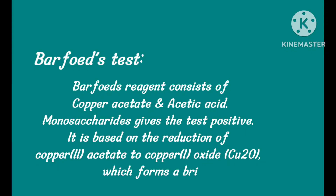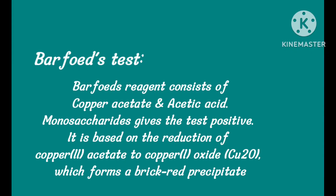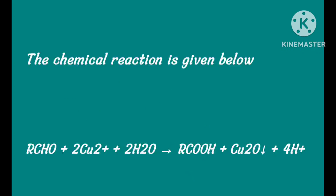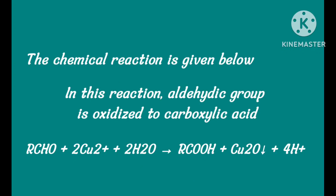Barfoed's test: This test is useful to differentiate between monosaccharides and disaccharides — for example, glucose and fructose from lactose and maltose. Barfoed's reagent consists of copper acetate and acetic acid. Monosaccharides give a positive test. This test is based on the reduction of cupric ions to red-colored cuprous oxide. In this reaction, the aldehyde group is oxidized to carboxylic acid and reduces the cupric ions to cuprous oxide.